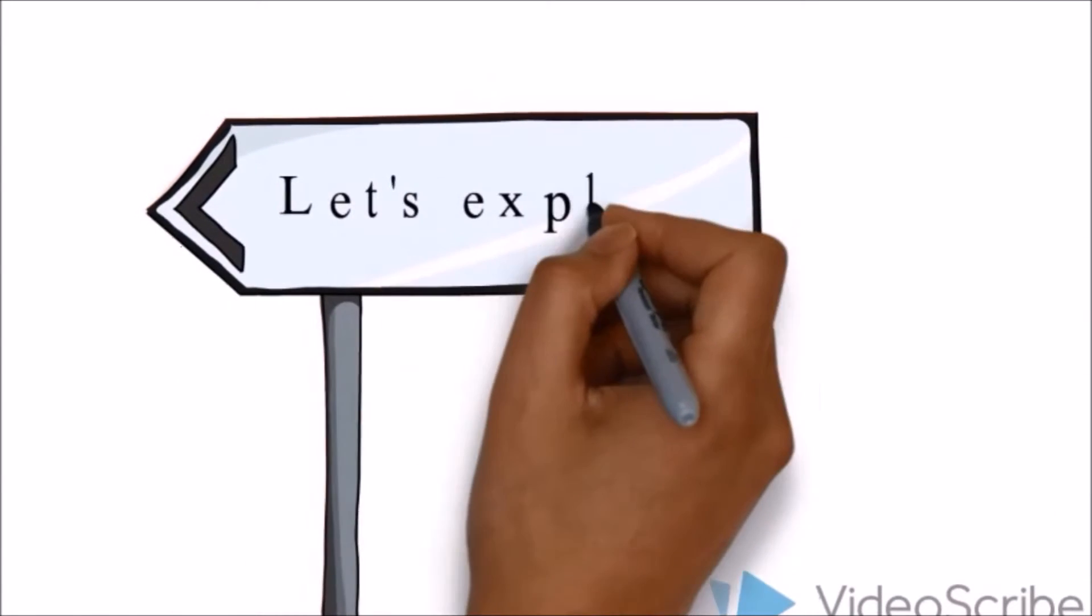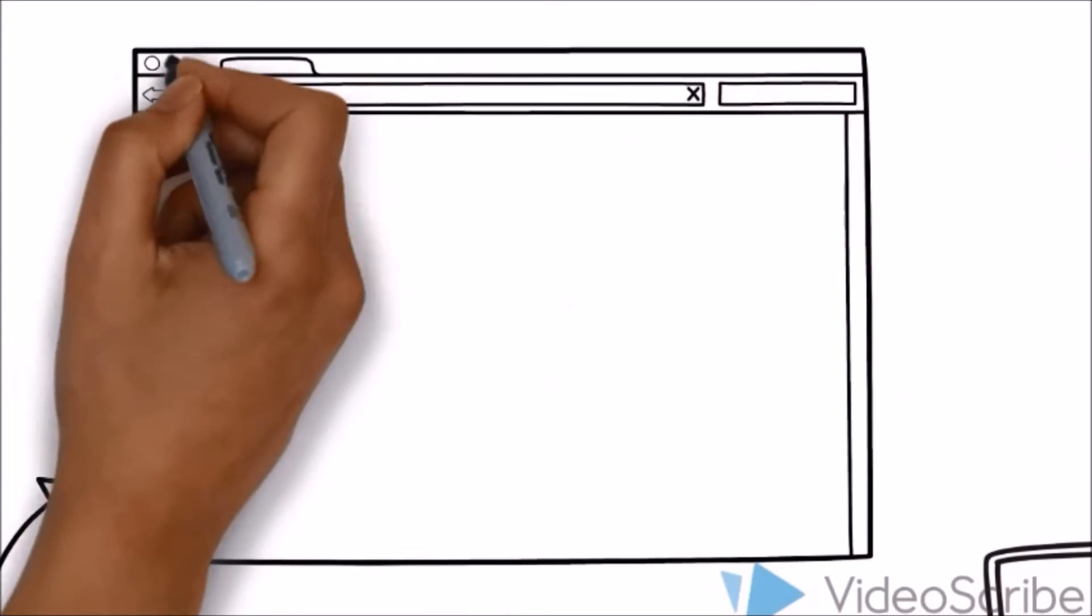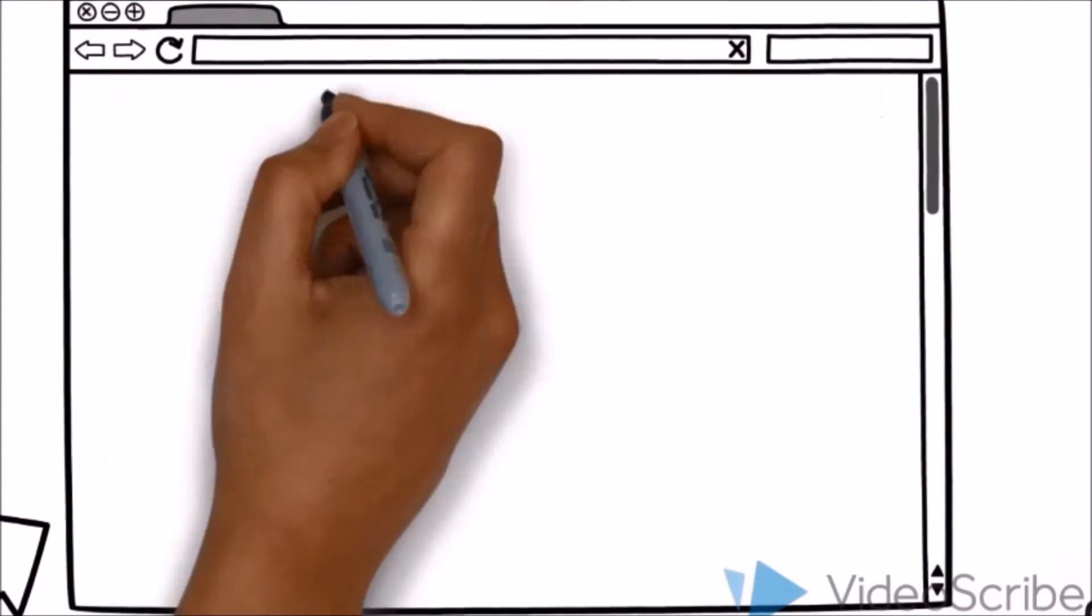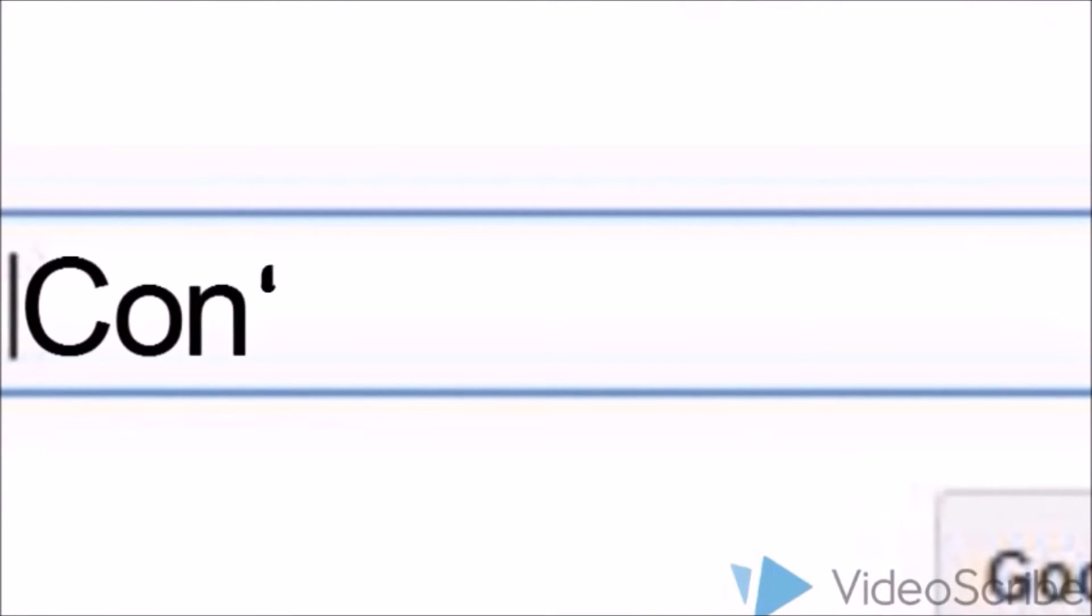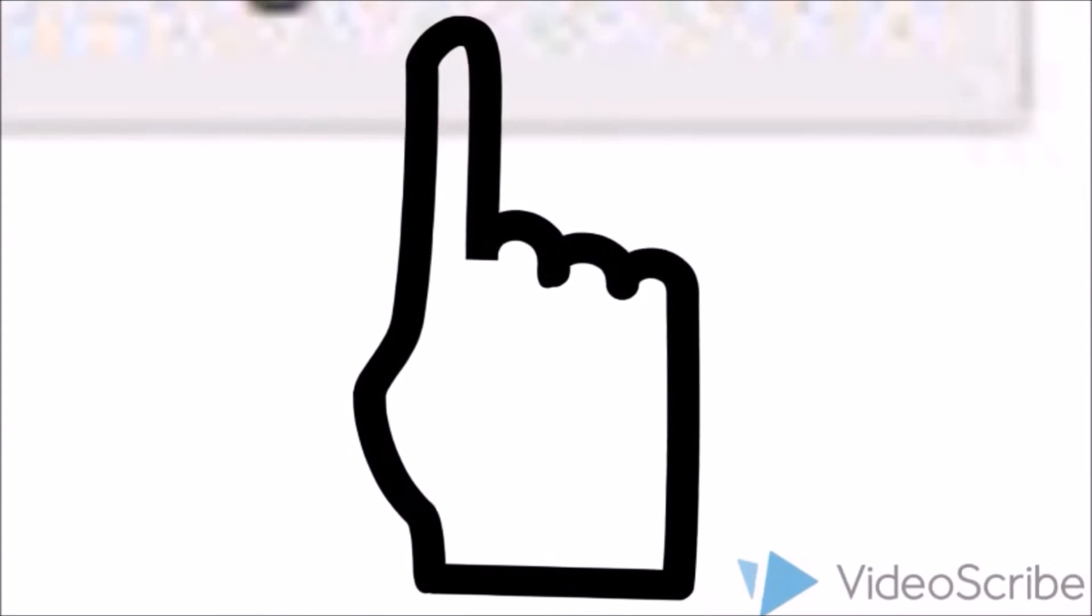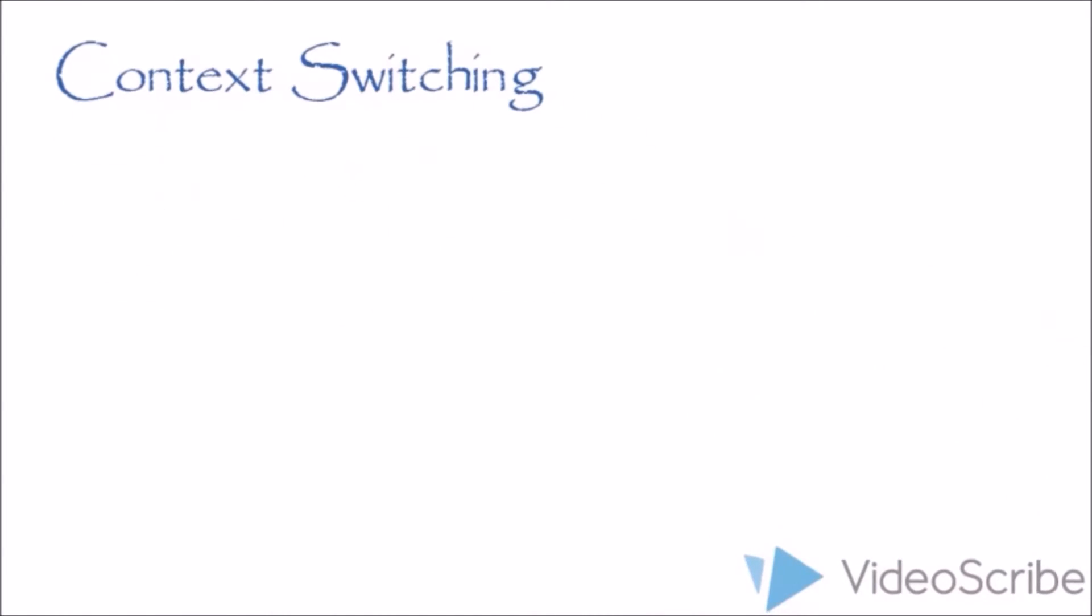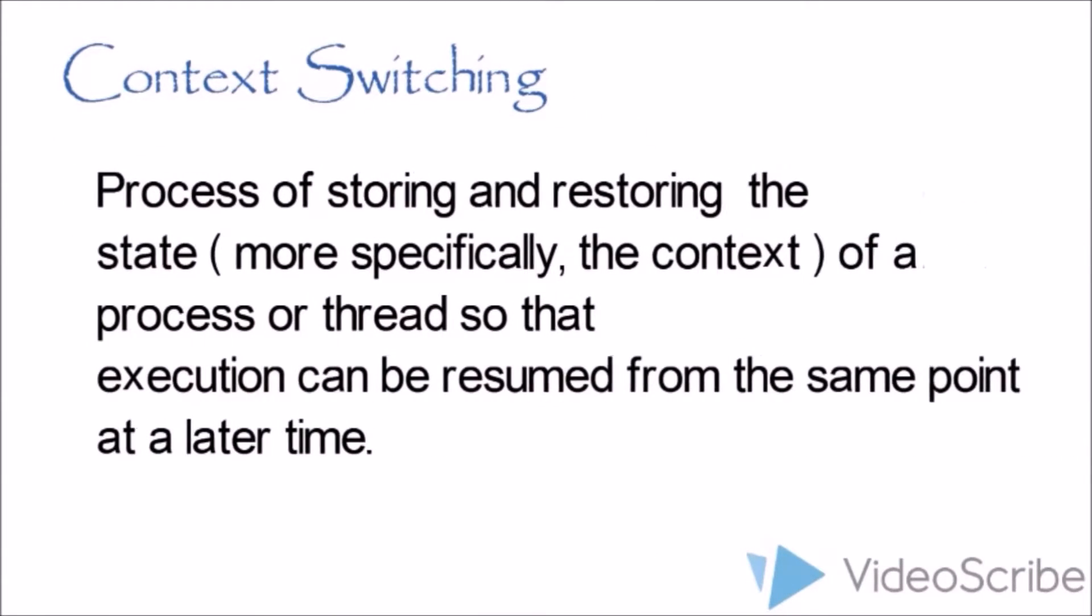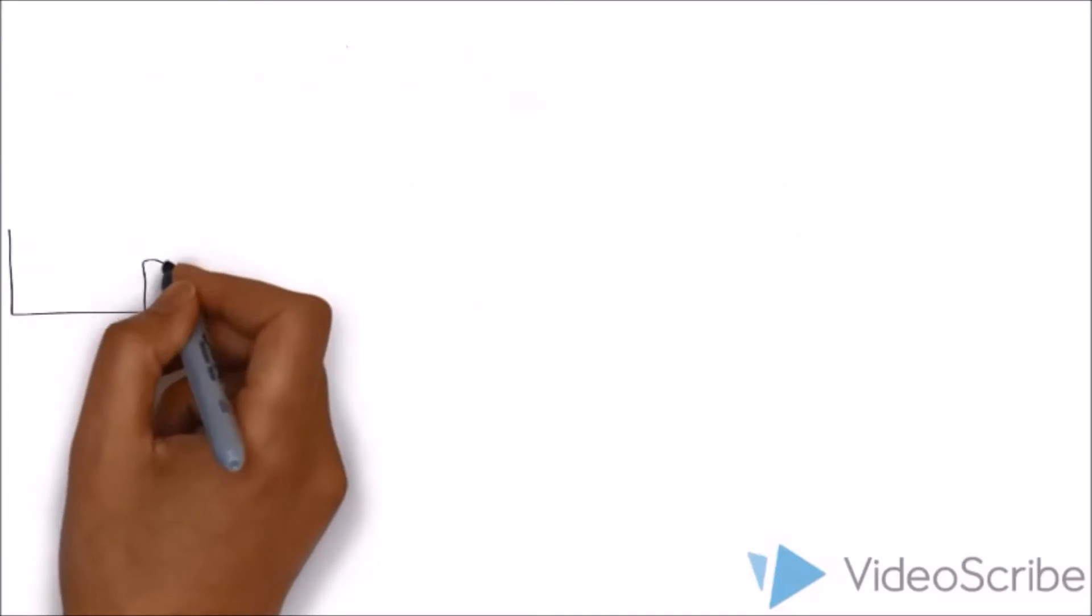Okay, let's explore! As usual, as a student, let us ask Mr. Google! Click! Context switching: Process of storing and restoring the states, more specifically, the context of a process or thread so that execution can be resumed from the same point at a later time.